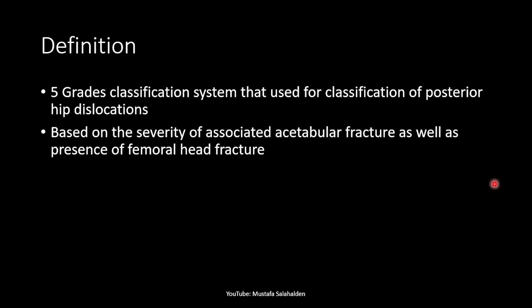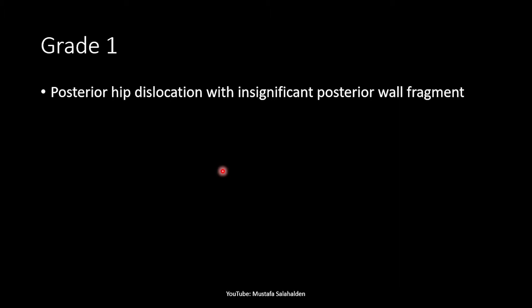This is a 5-grade classification system used for classification of posterior hip dislocations. It was created in 1951 and is based on the severity of associated acetabular fractures as well as the presence of femoral head fractures. So there are two things this classification is based on: acetabular fractures and femoral head fractures. It is a 5-grade system starting with grade 1.